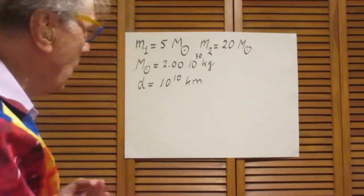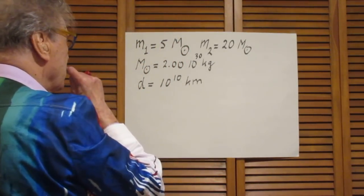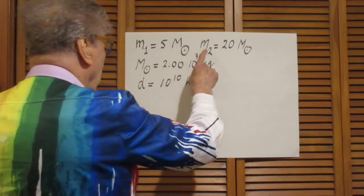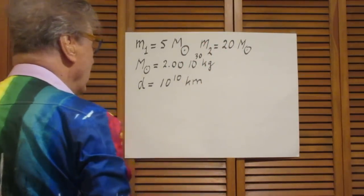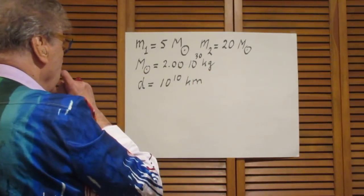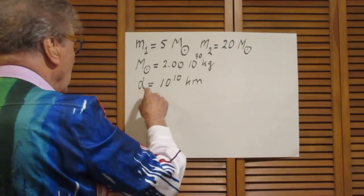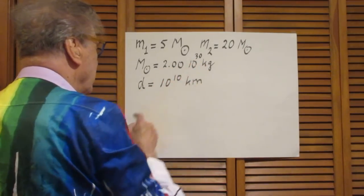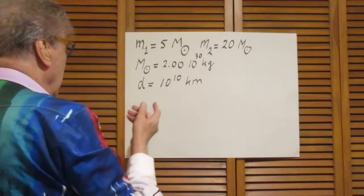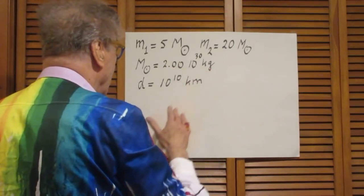So we have a binary star system here. One star is five times the mass of the Sun and the other star is 20 times the mass of the Sun. For simplicity we will take for the mass of the Sun 2.00 times 10 to the 30 kilograms — it's really close to 1.99 but let's take 2.00.